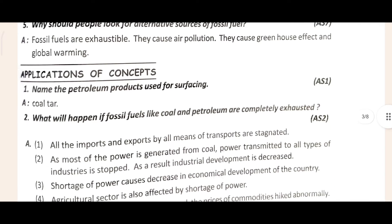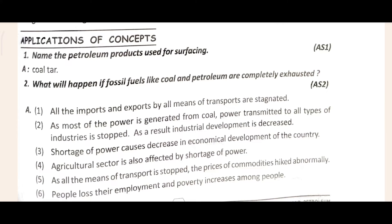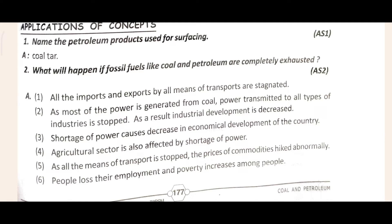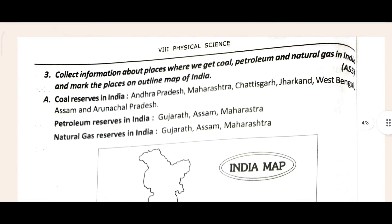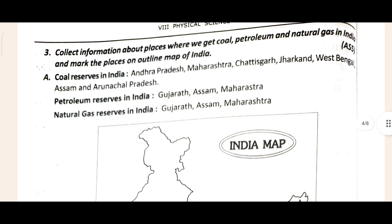If that is clear, come to the application of concept. The first question asks to name the petroleum product used for surfacing roads. The second question asks what will happen if fossil fuels like coal and petroleum are completely exhausted. The third question says: collect information about the places where we get coal, petroleum, and natural gas in India and mark them on an outline map of India.